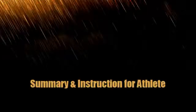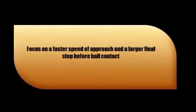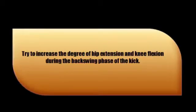In conclusion, here is some instruction to help the athlete increase performance. First, the athlete should focus on a faster speed of approach and taking a larger final step before ball contact. This will allow for a deceleration of the body to occur, thus allowing the kicking leg a greater time to accelerate through a full range of motion, enhancing the maximal final velocity of the foot at the time of impact. Second, the athlete should try to increase the degree of hip extension and knee flexion during the backswing phase. Doing this will increase the range of motion and time for the thigh-shank segment to accelerate, thus increasing the final velocity of the foot at impact.